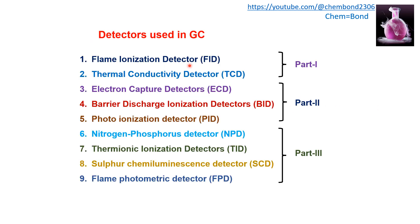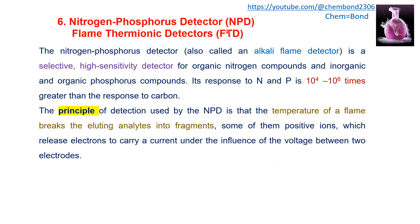Various detectors are used in gas chromatography. The first five detectors have been discussed in Part 1 and Part 2 of this lecture. This video will cover the nitrogen phosphorus detector, thermionic ionization detector, sulfur chemiluminescence detector, and flame photometric detector.